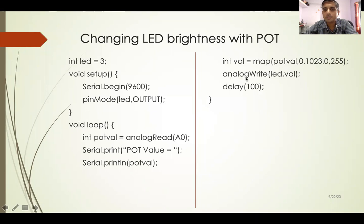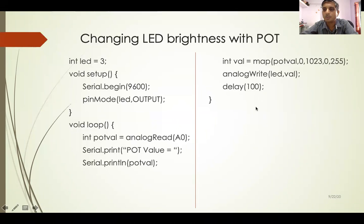Previously we used the analogWrite function, which takes two arguments: the pin number — which should be a PWM pin — and the analog value to write. That second value should be in the range of 0 to 255. Here there is a problem: our potval has a range of 0 to 1023, but we want to convert it to the range of 0 to 255.